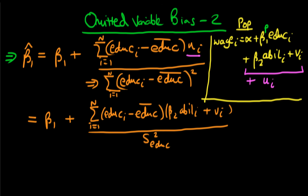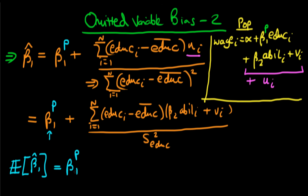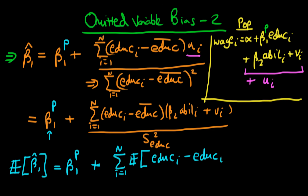To evaluate whether our estimator is biased, we need to take the expectation of this expression. When we do that, the expectation of beta_1_hat equals beta_1_p — since it's a constant — plus the sum from i=1 to n of the expectation of (education_i minus the average education) times innate ability, because the expectations operator is linear and passes through the sum.